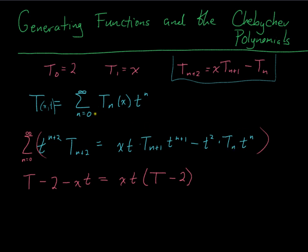So I've got xt times the big T that I want, minus the first one, which is 2. And then when I sum this last one, well n is starting at 0, I'm supposed to start at 0, so this one really is just minus t²T.